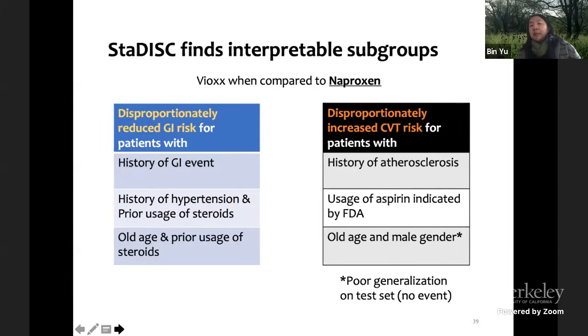And then for the cardiovascular event, we actually find other three subgroups. History of atherosclerosis, which is basically plugging your heart artery. The other group uses aspirin, that's probably meaning that you already have some blood clotting problem. Because one problem we find is that Vioxx can really clot the blood, so make things worse for people who already have blood clotting problem. That's why I think Merck pulled the drug from the market. And the third group is old age and male gender.